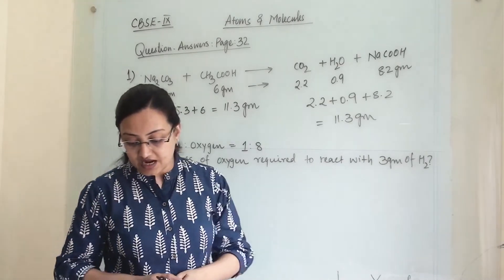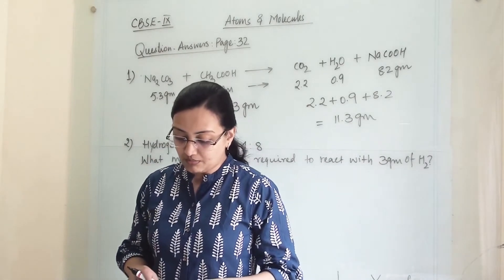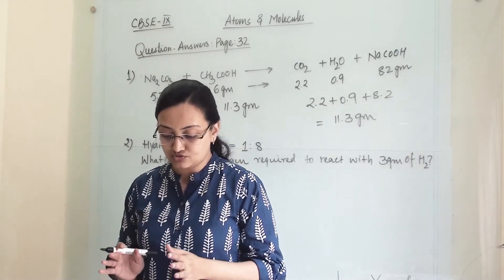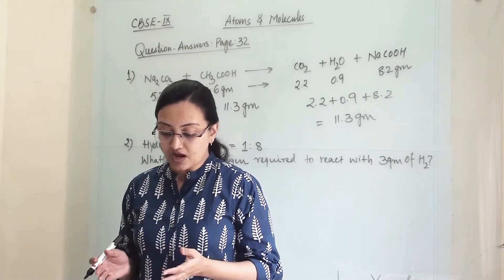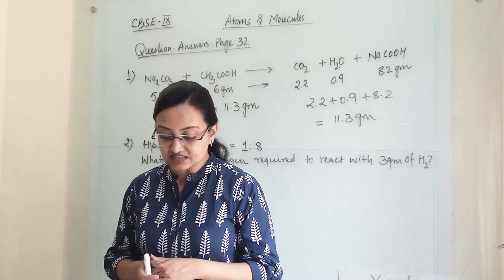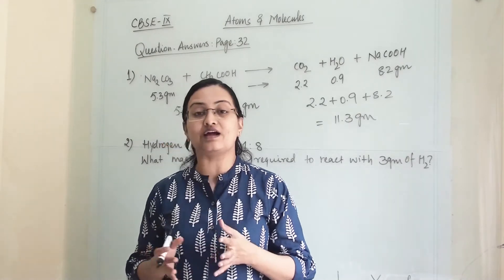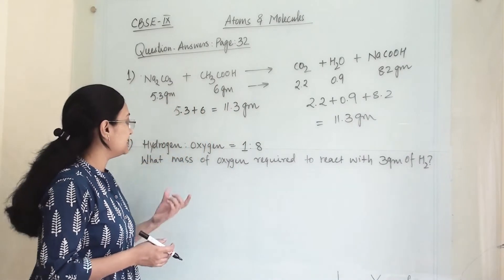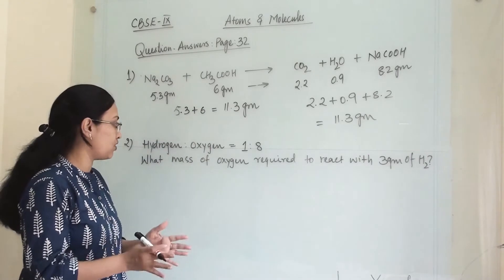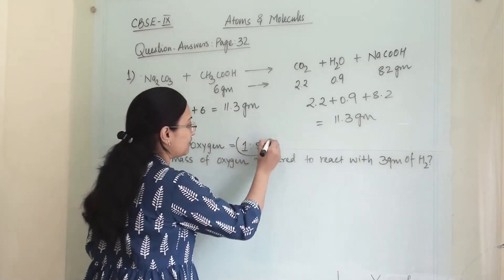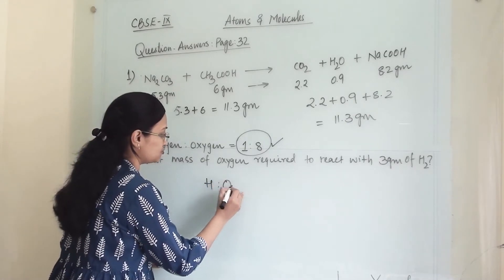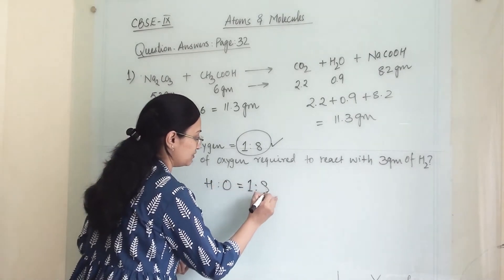The second question states that hydrogen and oxygen combine in the ratio of 1 to 8 by mass to form water. What mass of oxygen gas would be required to react completely with 3 gram of hydrogen gas? We know that hydrogen and oxygen when reacted together give water, and for water we require this ratio of hydrogen to oxygen, which is 1 to 8.